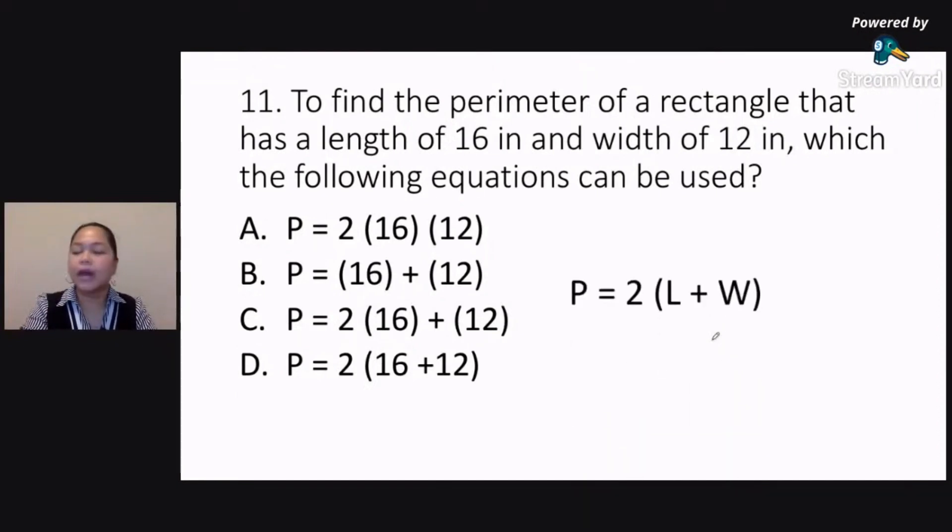Now remember that the formula for the perimeter of a rectangle is 2 multiplied by the quantity length plus width. So uunahin po yung pag-add ng length plus width. Although you can of course distribute that, but this is our formula. So following the formula, the correct answer for this would be letter D. P equals 2 multiplied by the quantity 16, which is our length, plus 12, which is the width. So letter D is the correct answer for number 11.